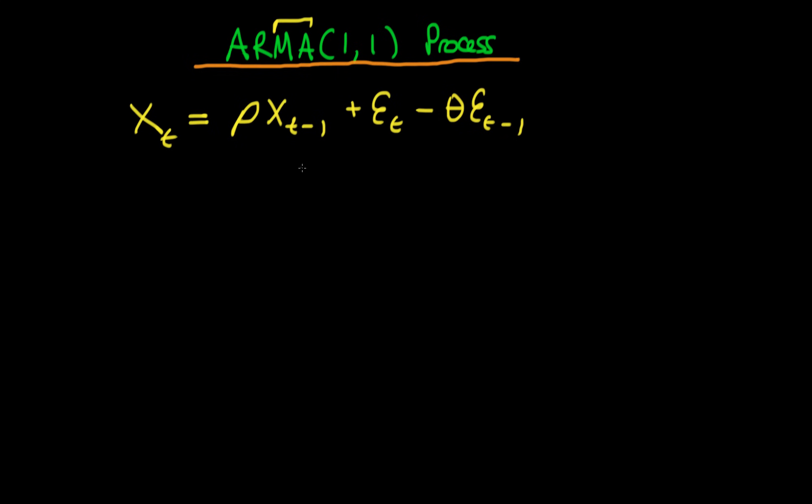So an ARMA 1-1 process is exactly what it says on the tin. It's an auto-regressive of order 1 process, which is just this, and a moving average of order 1 process, which is this term here.